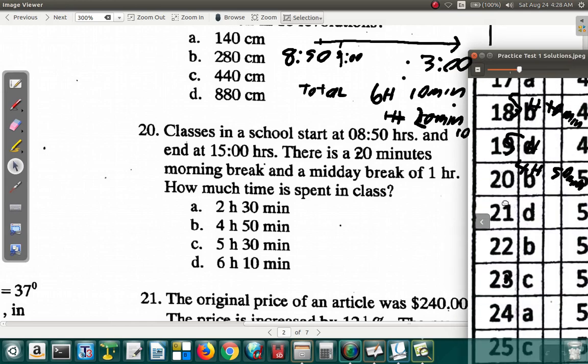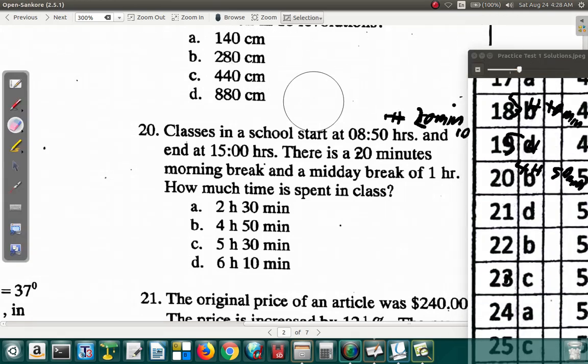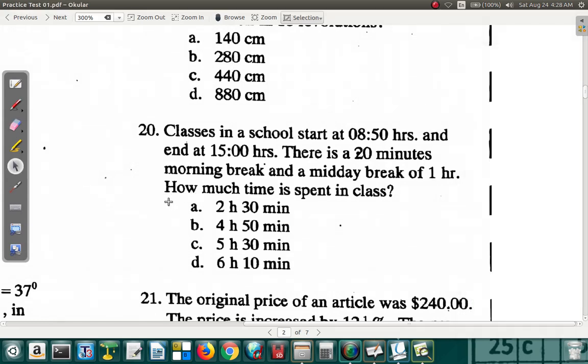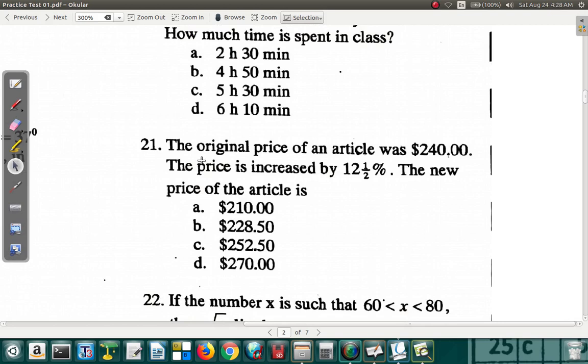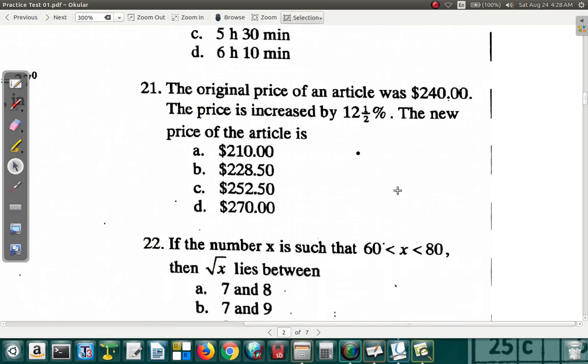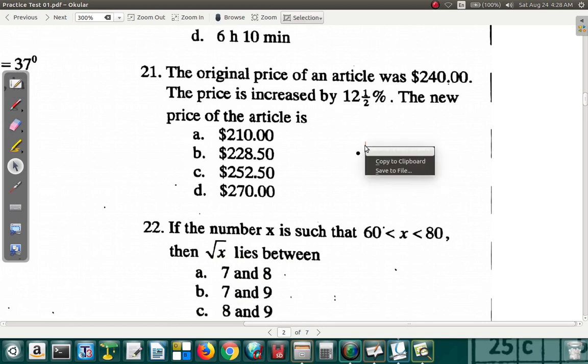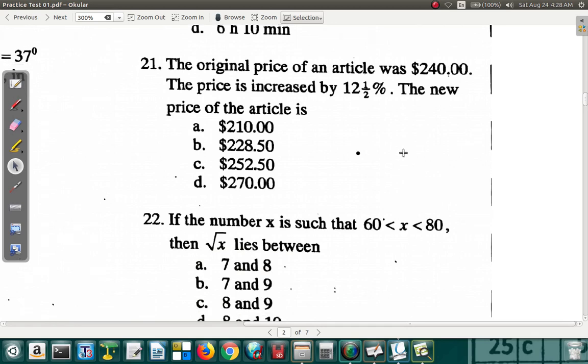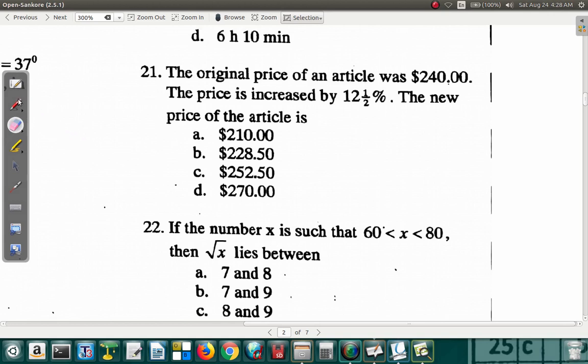And then it says that question 21 is D. Let's see about that. In a while. Question 21. Let's look at what question 21 says. The original price of an article was $240. The price was increased by 12.5%. The new price of the article is... Let's see. Original price $240.